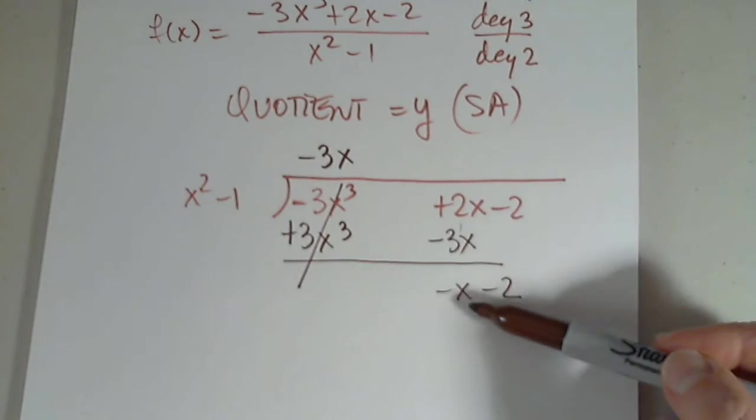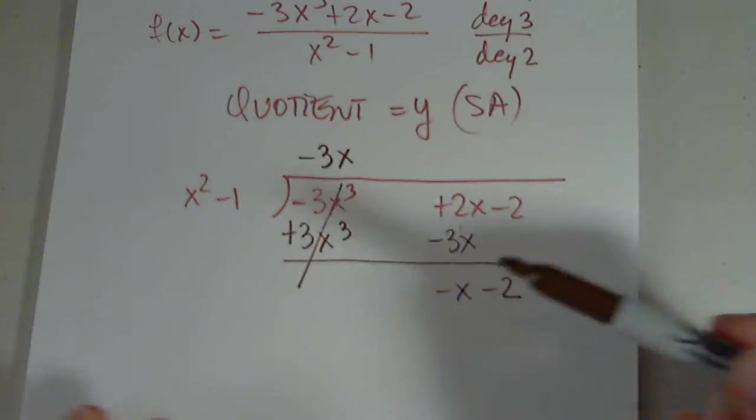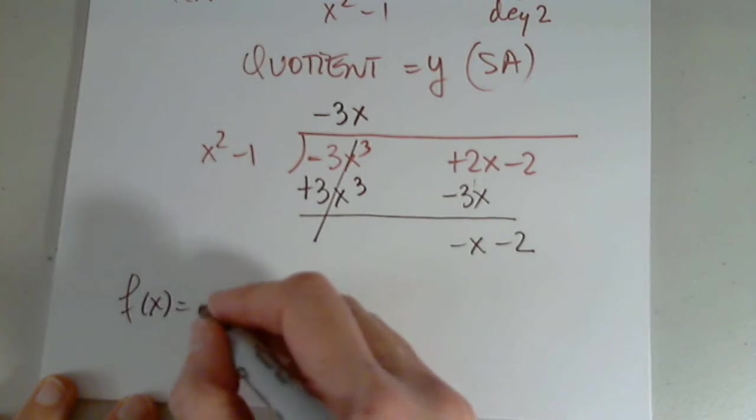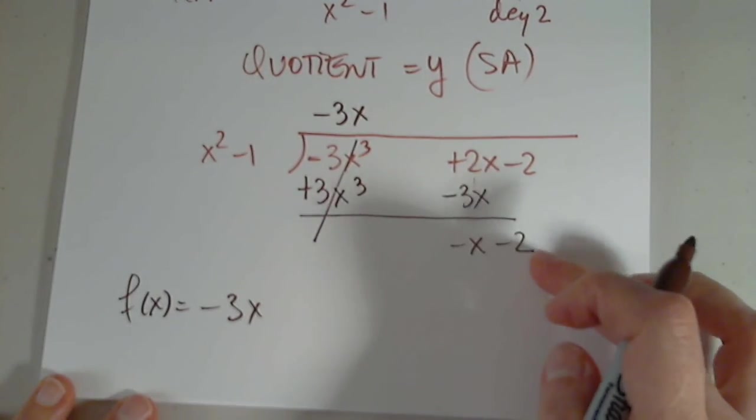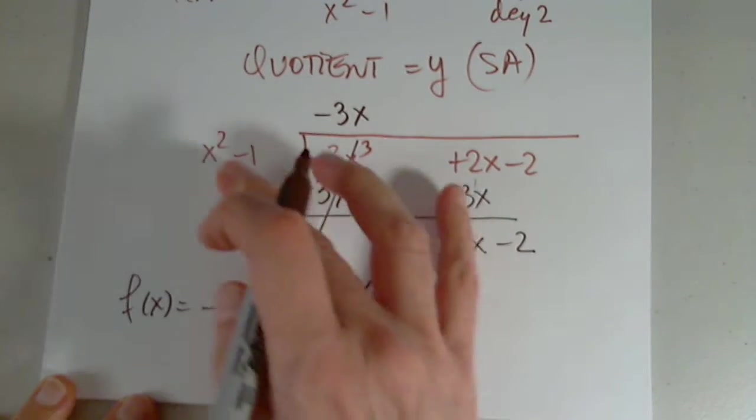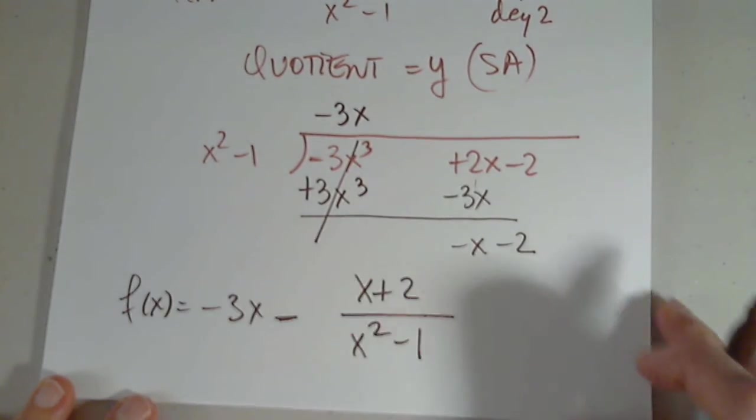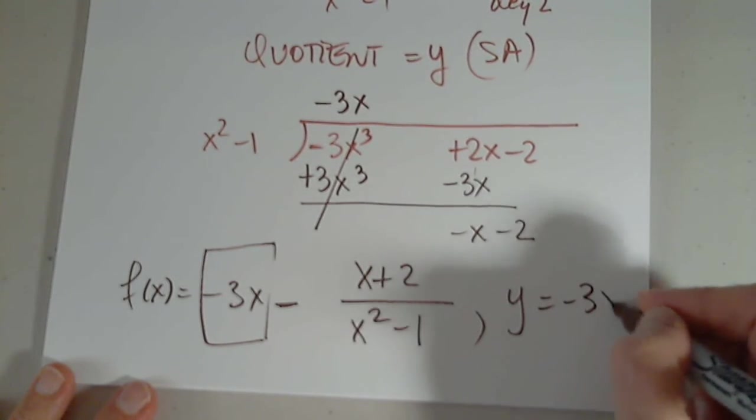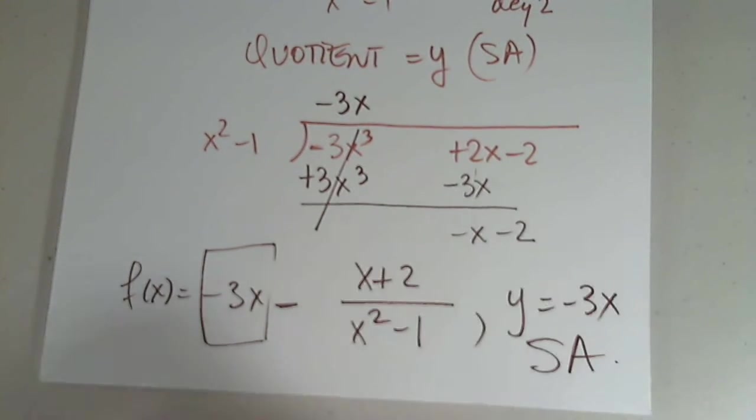Because x squared does not go into negative x. So this function can be written as negative 3x. Plus or minus. I will write minus. x plus 2. Divided by x squared minus 1. This is the slant asymptote. Y equals negative 3x is the slant asymptote.